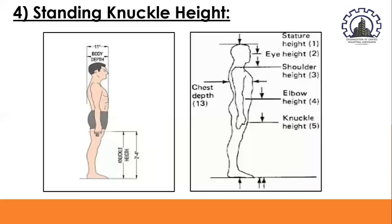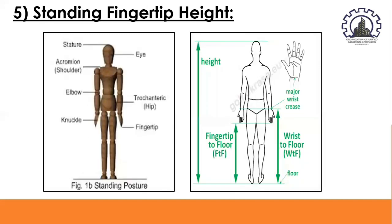Standing knuckle height is the height of the knuckle above the ground. It is used in ergonomics to determine the minimum height of a full grip for a standing operator. Operators with high standing knuckle heights should not have to stoop when grasping objects in the workplace. Standing fingertip height is the height of the tips of the fingers above the ground, used to determine the lowest allowable position for controls such as switches.